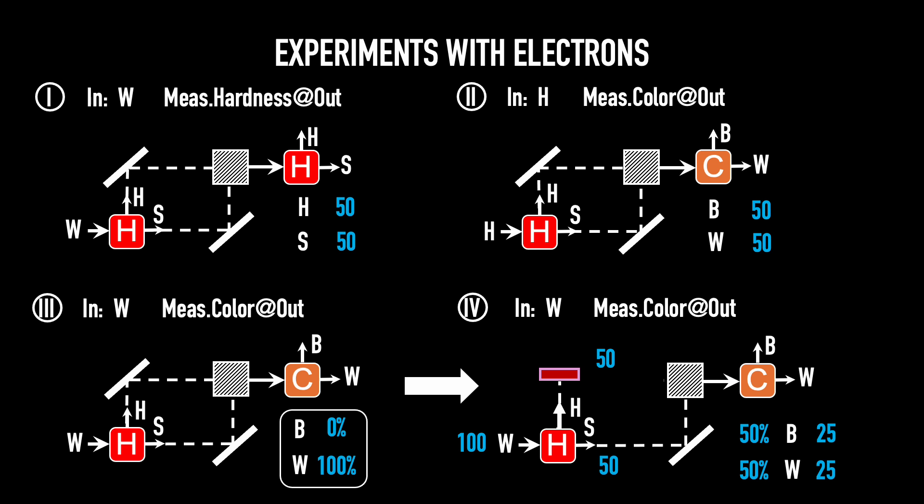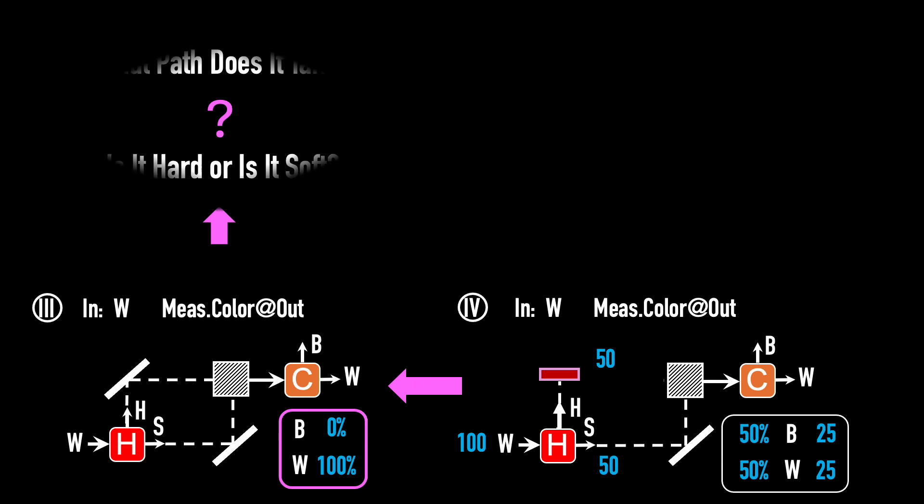In summary, experiment four shows this. If a single electron takes just one path inside the apparatus, either soft or hard, it comes out 50% white and 50% black. In no case is it 100% white and 0% black. Now let's look back at experiment three with both paths open. If we send a single white electron into the apparatus, it always comes out 100% white and 0% black. So here's the question. What path does it take inside the apparatus? Is it hard or is it soft as it travels through? Let's check all the possibilities.